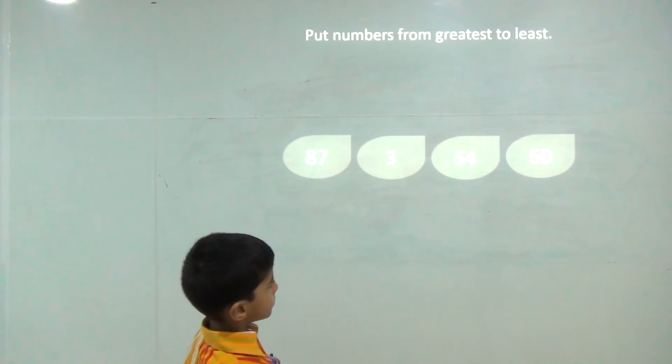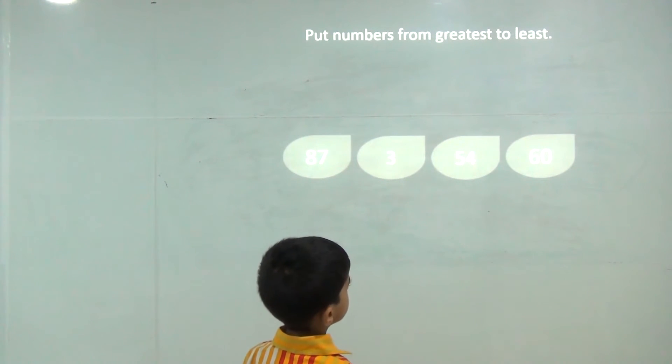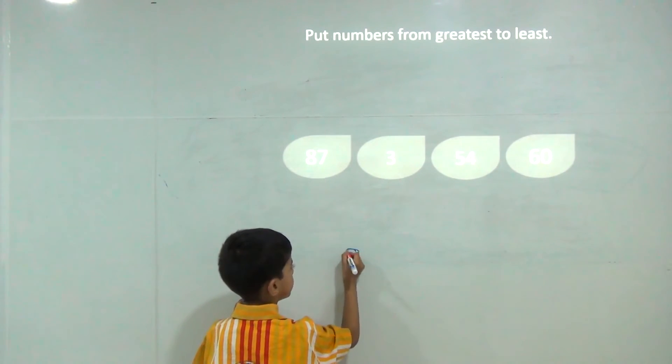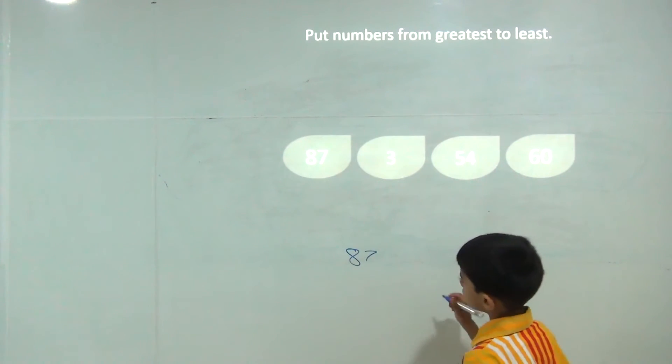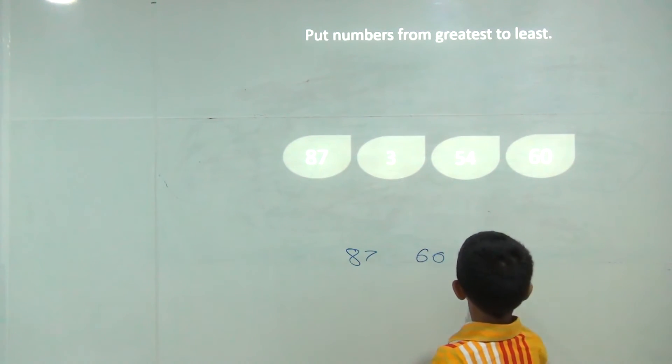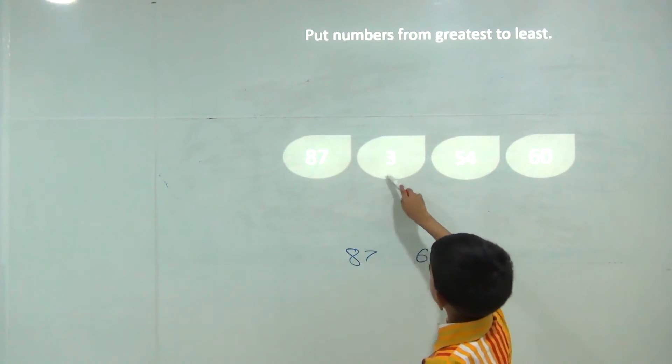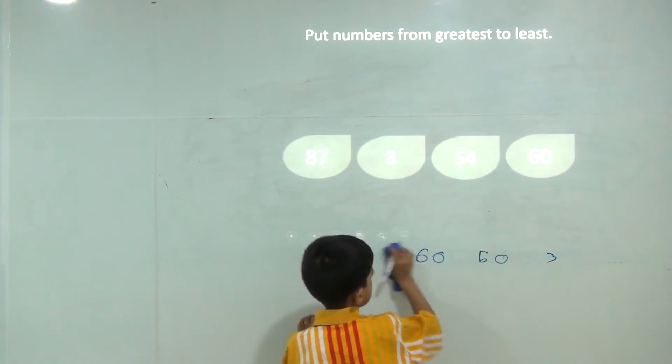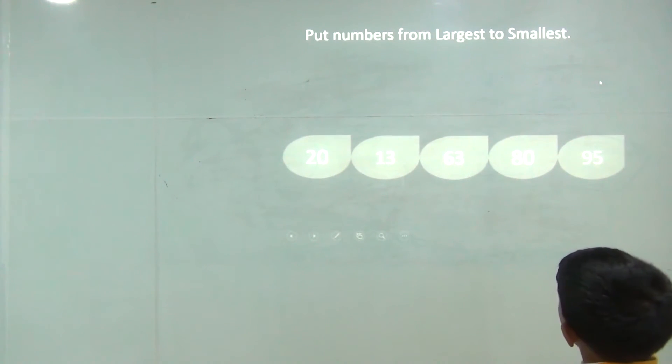Now the greatest to least. The biggest number is 87, smaller than 87 is 60, smaller than 60 is 54.